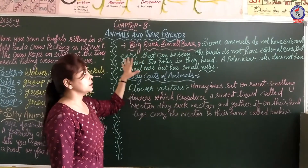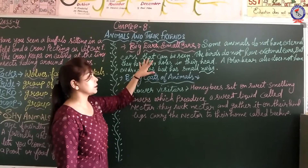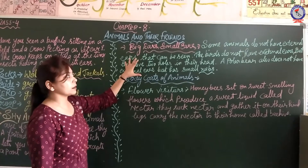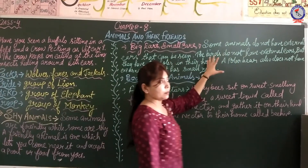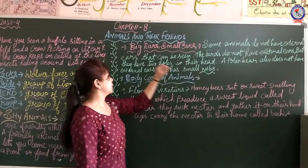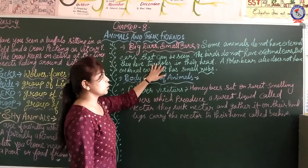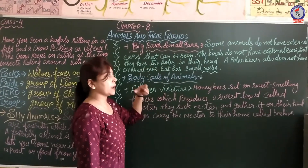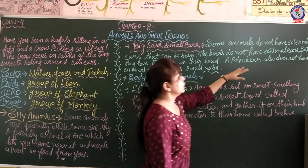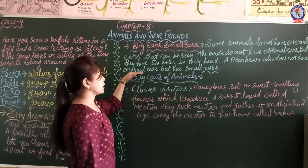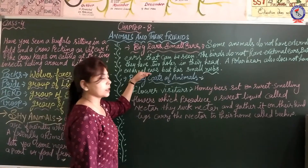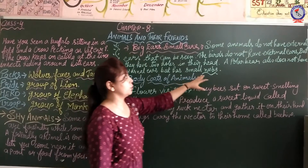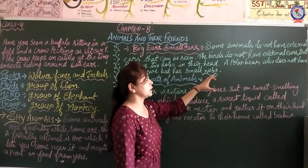Some animals do not have external ears that can be seen. Birds do not have external ears, but they have two holes in their head through which they can hear. A polar bear also does not have visible external ears — they have very small, flat ear structures on their face.